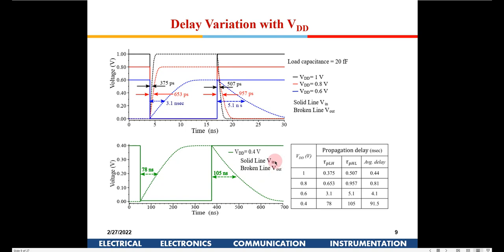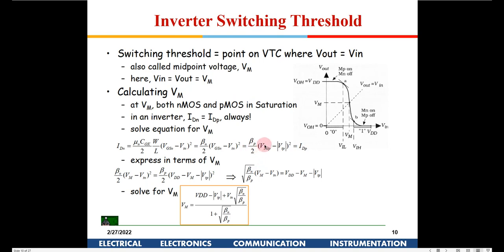These two issues — increasing delay and decreasing noise margin — are the drawbacks of a conventional inverter when operated at low VDDs. We need to find a circuit which can overcome these drawbacks. The Schmitt trigger is used to overcome those two limitations.